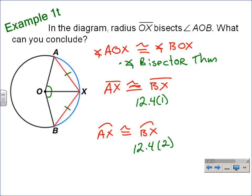Remember, theorem 12.4 part two reads that within a circle or in congruent circles, congruent chords have congruent arcs. So if the chords are congruent, then the corresponding or related arcs are congruent.